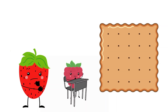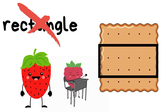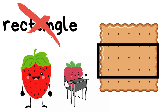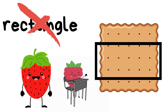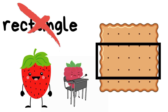What about this shape — is this a rectangle? It has four sides, but it's not a rectangle. A rectangle has two short sides and two long sides, and this object has four sides that look exactly the same size, so it is not a rectangle.